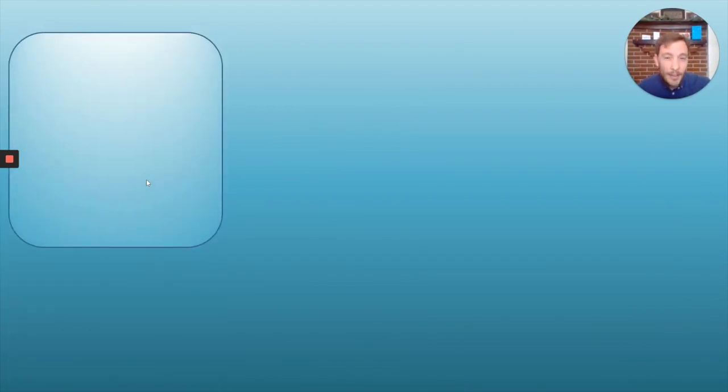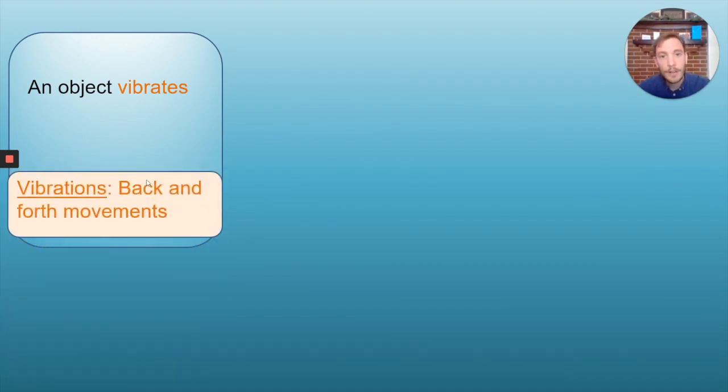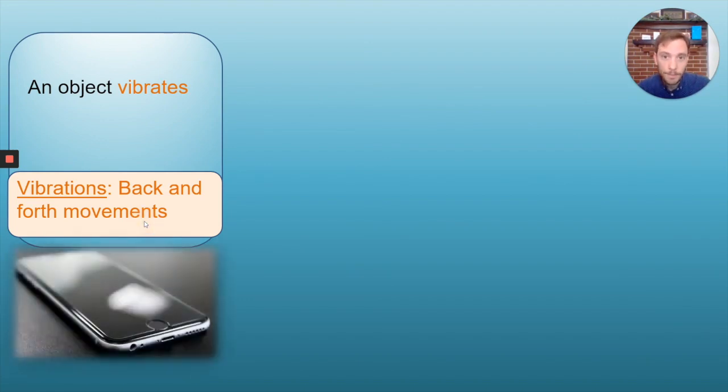So how does energy travel in waves? The first thing that happens is that an object vibrates. Vibrations are just back and forth movements that happen very quickly. So a really good example of this would be your cell phone when you get a text message and it moves back and forth very quickly.